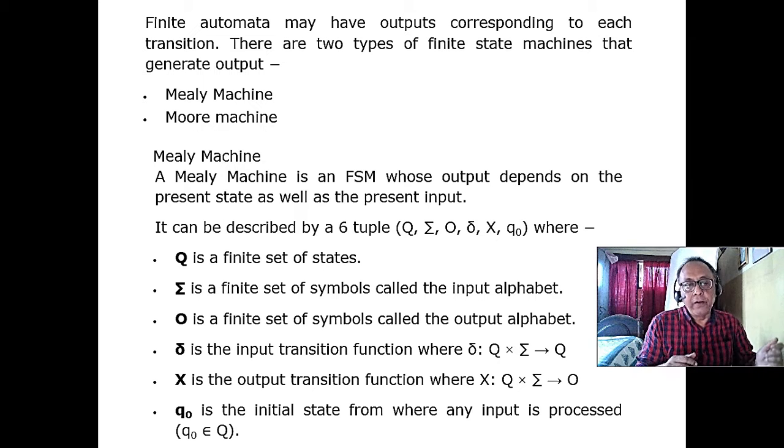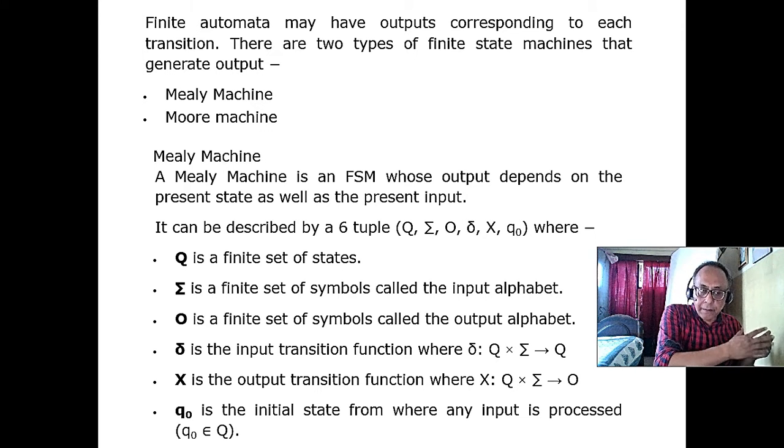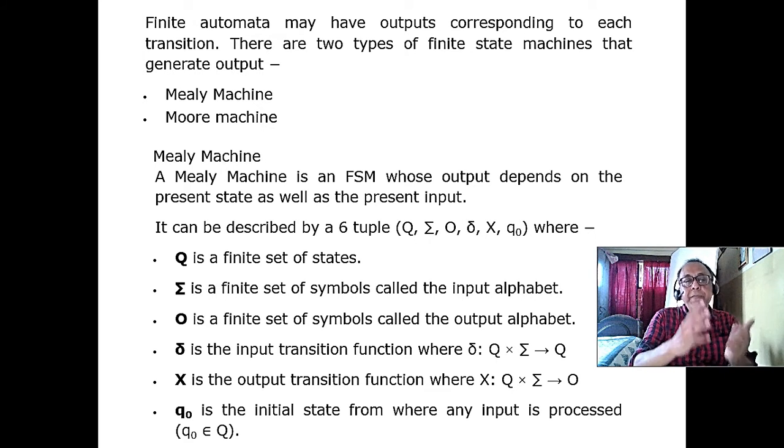What is A to the power M, B to the power N? Whenever you put a string to a finite state machine, like A, M number of repetitions, B, N number of repetitions, there's no relation between M and N. Whenever you put a string to a finite state machine, design the finite state machine, it accepts.